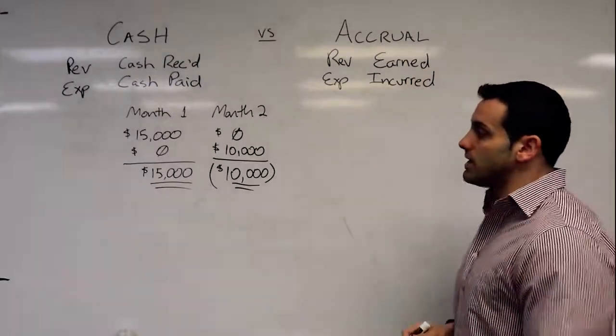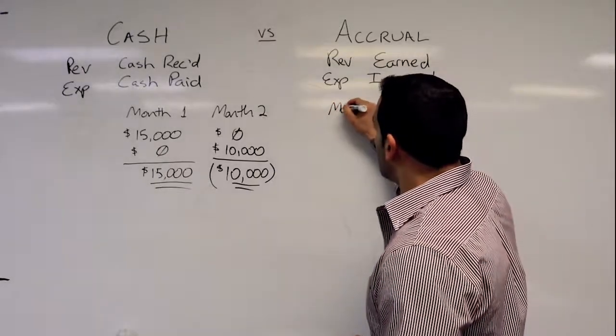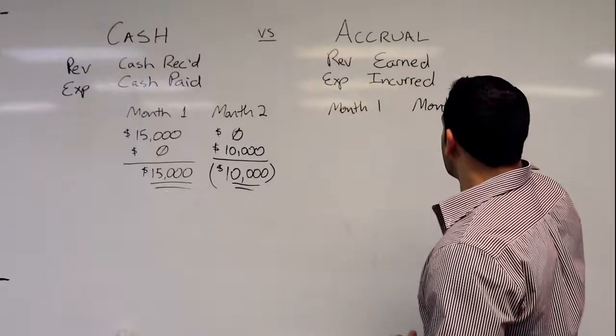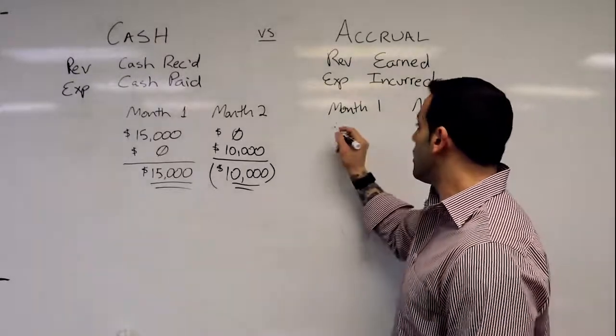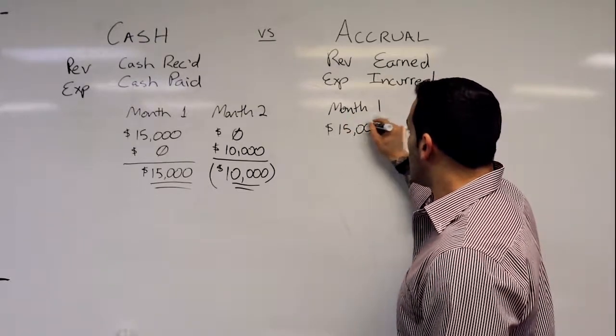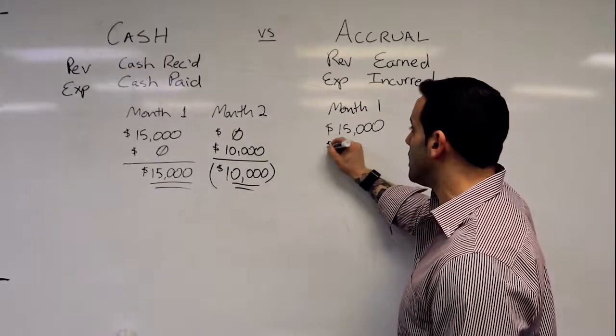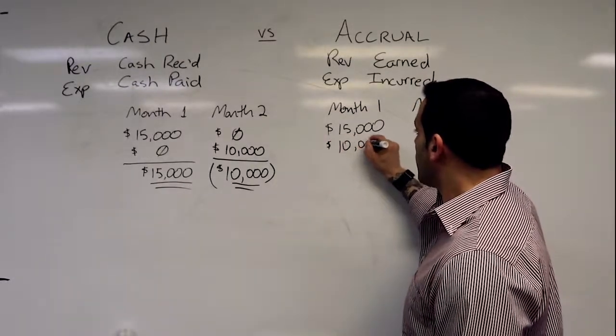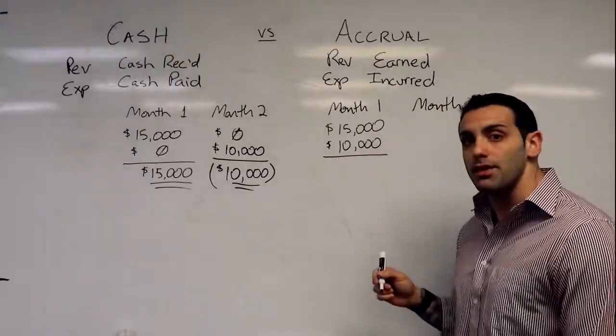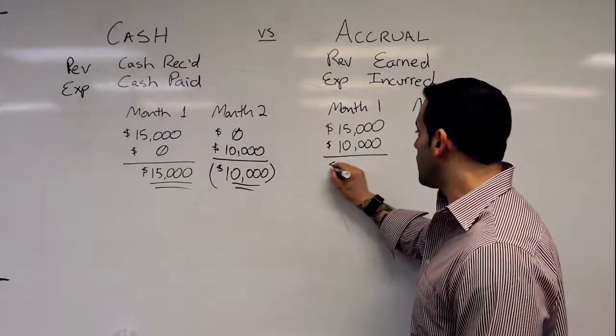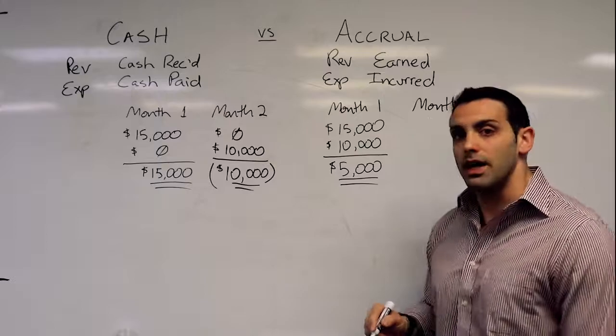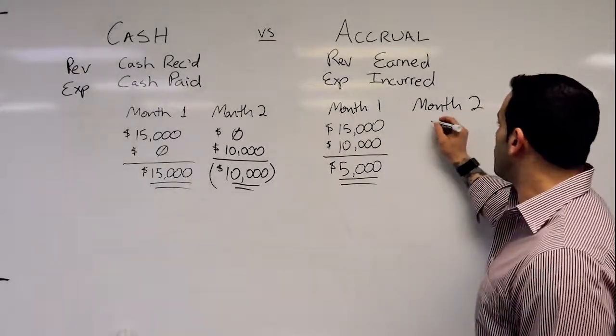In this same example, we have month one and month two. If I earned the revenue in month one and I also incurred the expenses or the material used to generate these same revenues, well then I'm going to have a very accurate number of five thousand dollars in net income or profit.